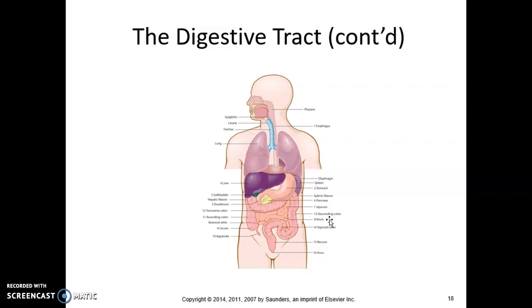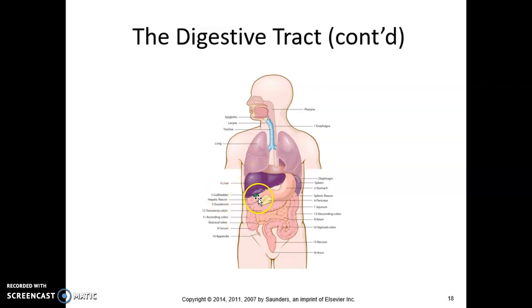Our food is going to head into the large intestine, but first I want to point out organs four and five. They empty their products into the small intestine — they're not actually part of the digestive tract directly, but they certainly help with digestion. Organ number four you should recognize as the liver, and sitting up underneath, kind of tucked away — usually shown in green because the bile inside is green — is the gallbladder. So four is the liver, five is the gallbladder.